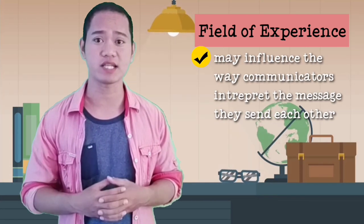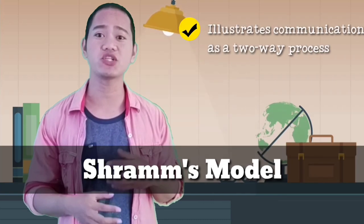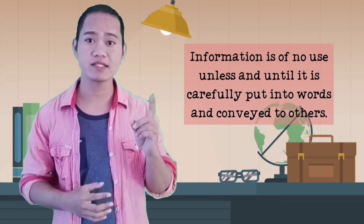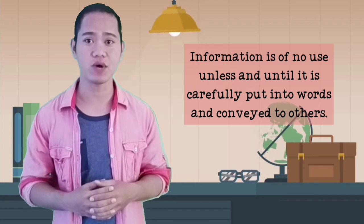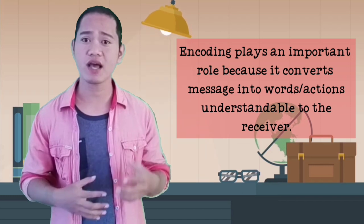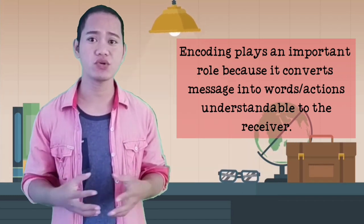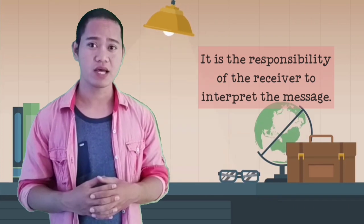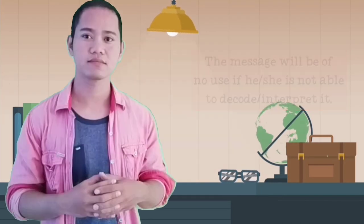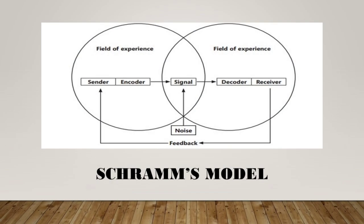The participants' field of experience is greatly considered by this model because it may influence the way they interpret the message they send each other. This model illustrates communication as a two-way process and thus also emphasizes the importance of encoding and decoding in the process. Schramm believes that information is of no use unless and until it is carefully put into words and conveyed to others. Encoding plays an important role because it initiates the communication process by converting an idea, information, or thoughts into words and actions understandable to the receiver. Having received the encoded message sent by the speaker, it is then the responsibility of the receiver to interpret it. And if he or she is not able to decode or understand it, the message or information is of no use.